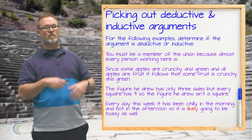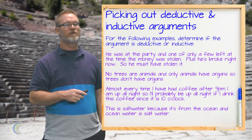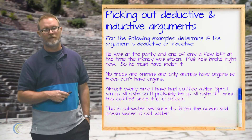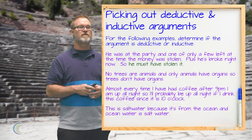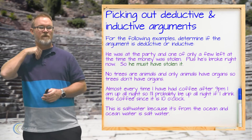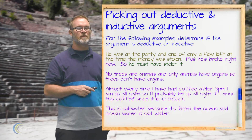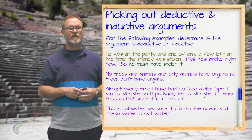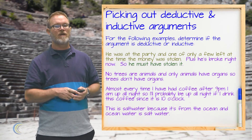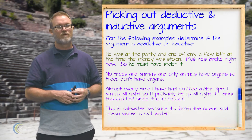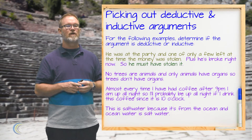Next: he was at the party and one of only a few left at the time the money was stolen. Plus he's broke right now, so he must have stolen it. The conclusion is that he must have stolen the money. But notice there were a few other people there too, so he might not have done it. The premises only support the likelihood of the conclusion, making this an inductive argument.